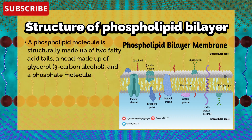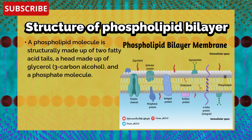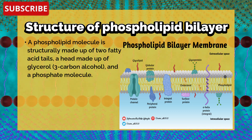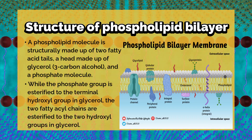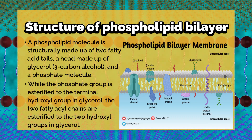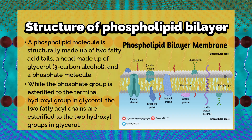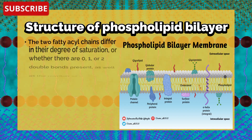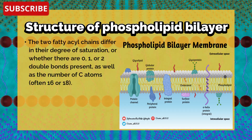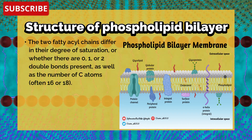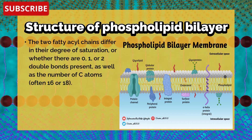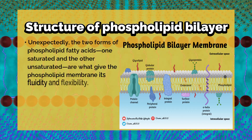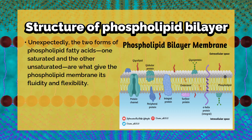A phospholipid molecule is structurally made up of two fatty acid tails, a head made up of glycerol three-carbon alcohol, and a phosphate molecule. The phosphate group is esterified to the terminal hydroxyl group in glycerol, while the two fatty acyl chains are esterified to the two hydroxyl groups in glycerol. The two fatty acyl chains differ in their degree of saturation and the number of carbon atoms, often 16 or 18.